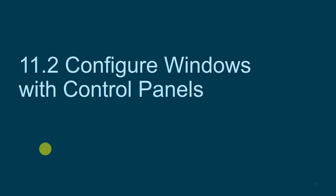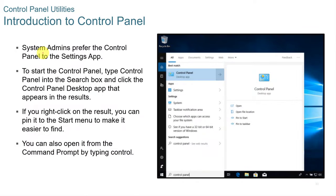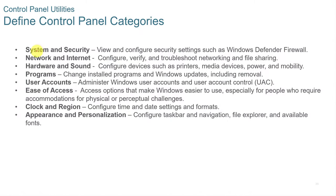Configure Windows with Control Panels. Windows 10 offers two ways to configure the operating system: the Settings feature or the Control Panel. System administrators prefer the Control Panel. To start it, type 'control panel' in the search box. Control Panel categories include: System and Security, Network and Internet, Hardware and Sound, Programs, User Accounts, Ease of Access, Clock and Region, and Appearance and Personalization.